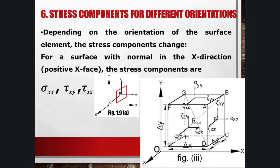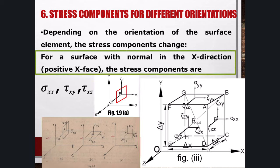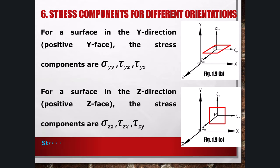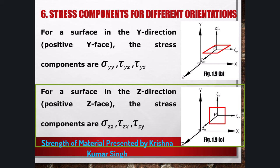These components will be different for different surface elements passing through the same point. Figure 1.9 shows three orientations of the surface elements passing through point P. In figure 1.9a, the element has its outer normal in the positive x direction and is called the positive x face, with stress components sigma_xx, tau_xy, and tau_xz. These components point toward the positive directions of the axes and are therefore positive as per the sign convention. Similarly, figure 1.9b shows sigma_yy, tau_yx, and tau_yz on the positive y face, and figure 1.9c shows sigma_zz, tau_zx, and tau_zy on the positive z face.